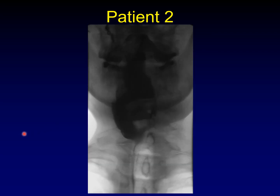Here's patient number two. You can see that there's asymmetric utilization of the piriform sinuses here as well, with a lot more of the contrast going down on the right than going down on the left.